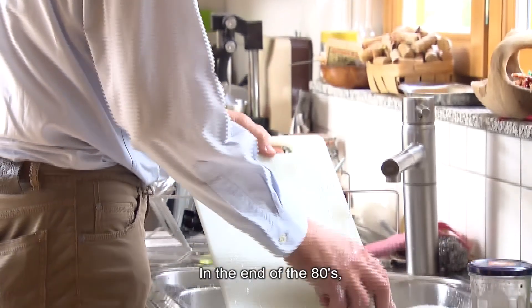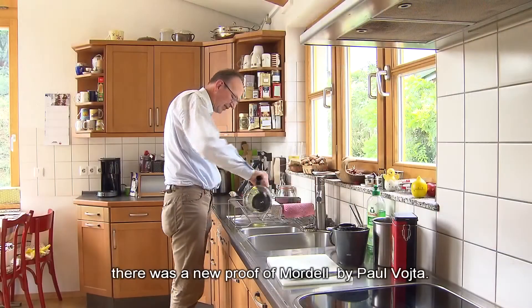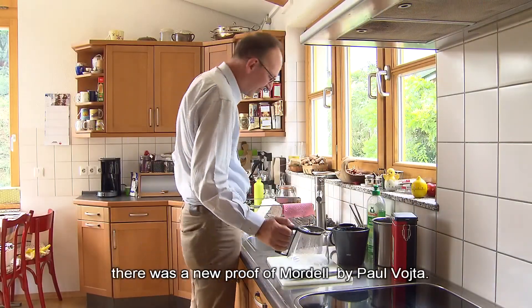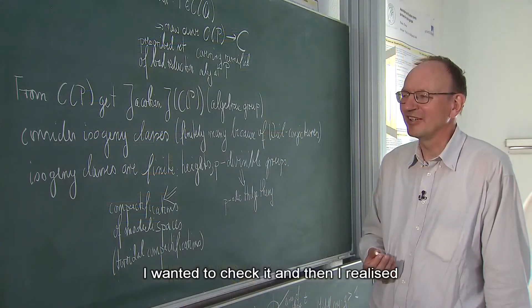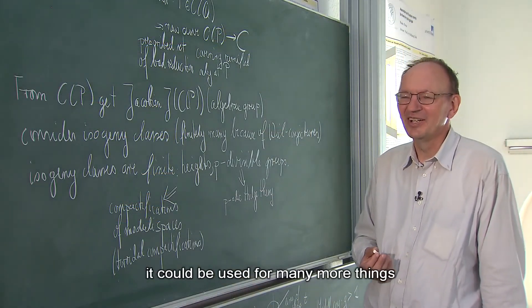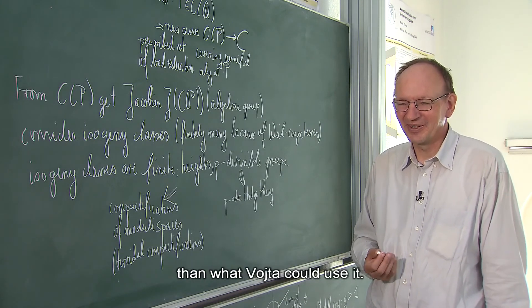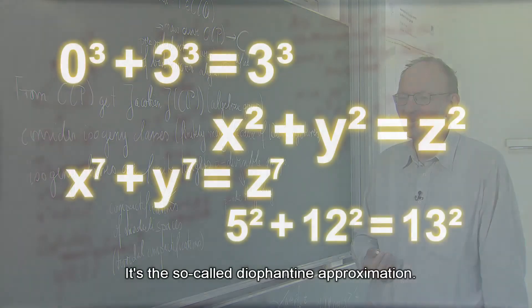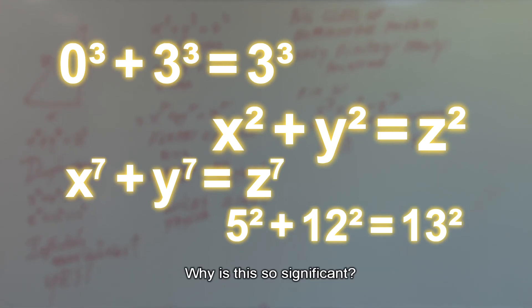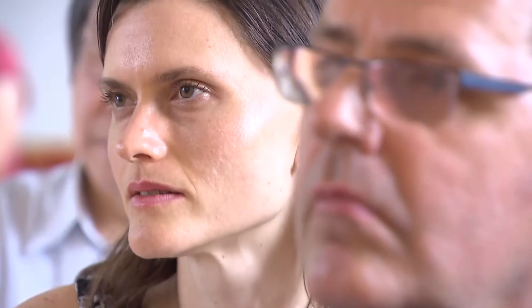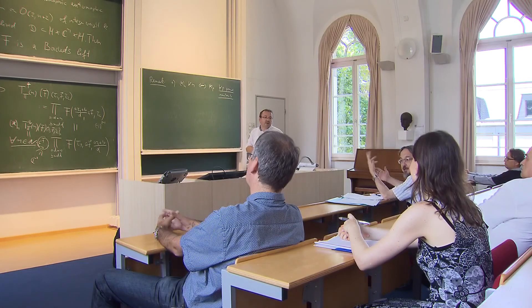In the end of the 80s, there was a new proof of Mordell by Paul Vojta. He wanted to check it, and then realized it could be used for many more things than Vojta had used it for. This is the so-called Diophantine approximation. Why is it so significant? Because Diophantine equations are very common — it forms a lot of the foundation of modern arithmetic geometry.